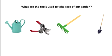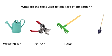Now, and finally, what are the tools used to take care of our garden? First, watering can. Second, pruner. Third, rake. And we have shovel.